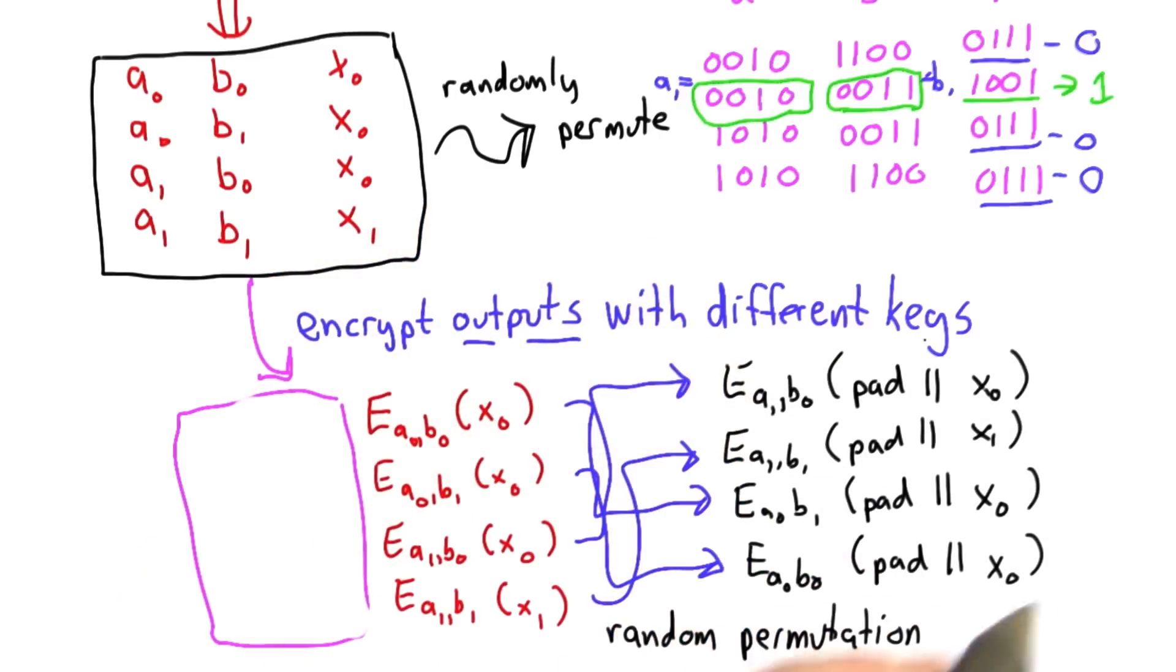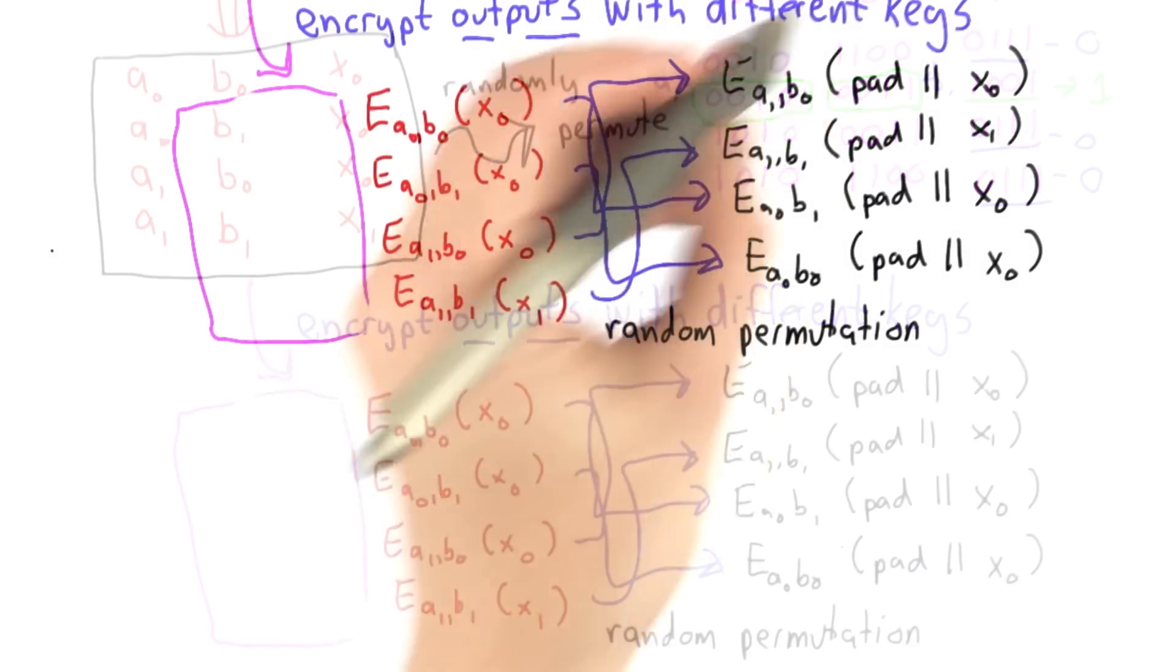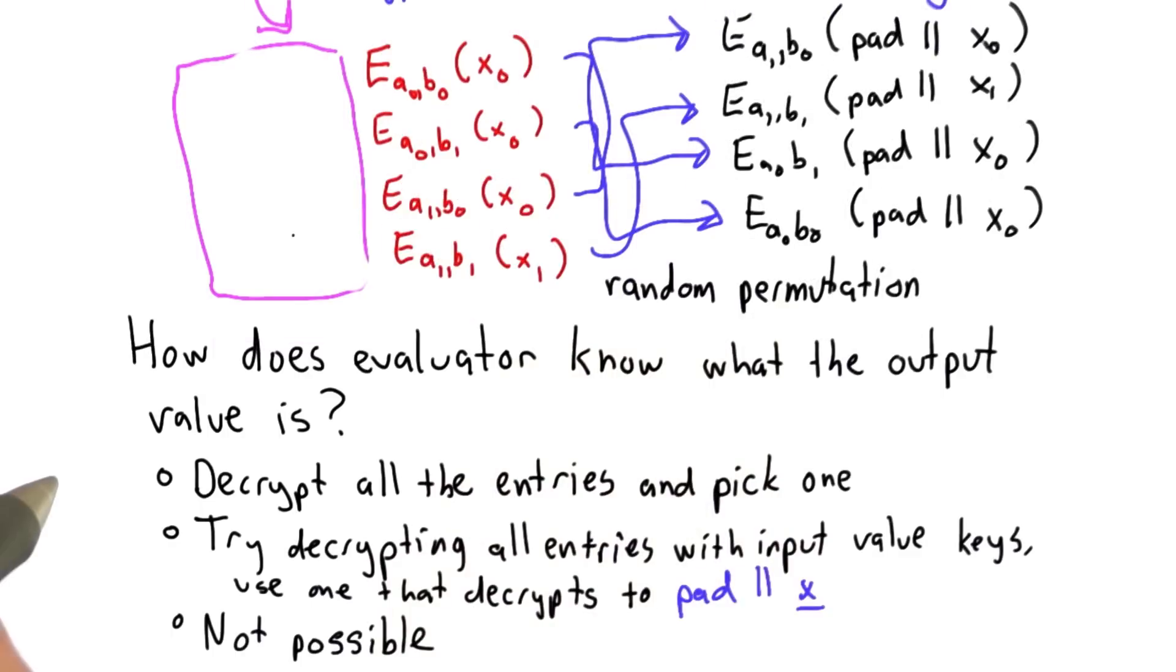Because each of these values is encrypted with a different key, the evaluator can't tell which one is which. The evaluator still needs to be able to decrypt these to produce the right output. So the question is, how does the evaluator know what the output of that truth table is?